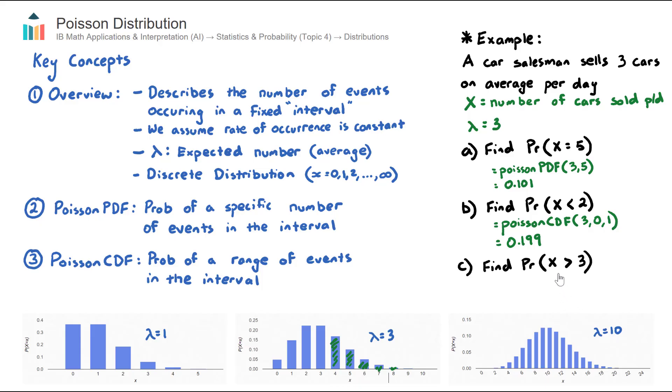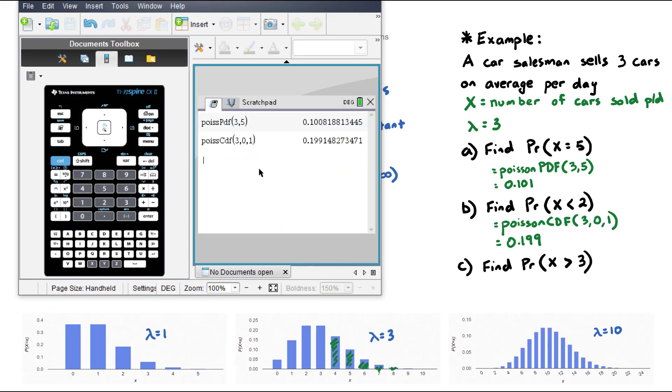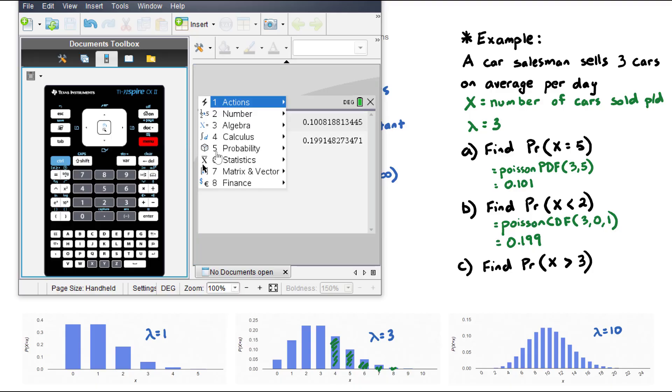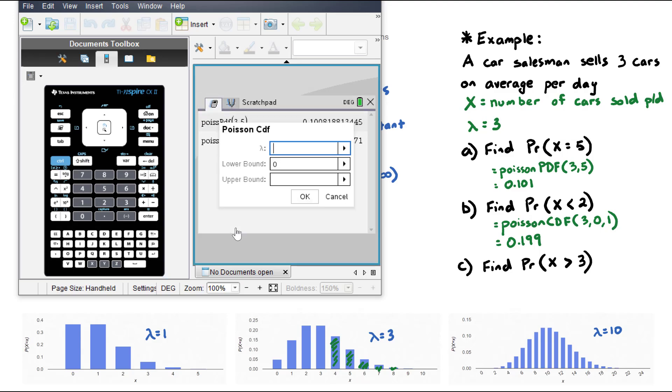The answer to part C is the sum of the heights of 4 and above. Now, the TI and SPI calculator does allow you to do that. We can go menu, probability, distributions, right down to Poisson CDF.